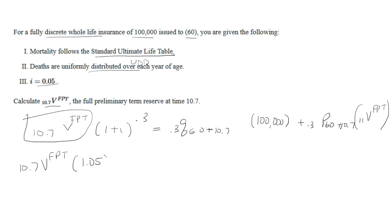We need to calculate the mortality. For this one we have to use UDD, so that's really the same thing as 0.3 multiplied by q_70.7.